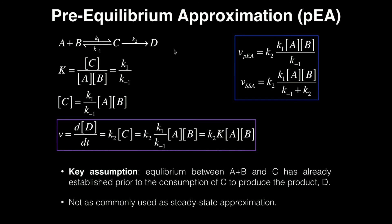Basically, because we assume equilibrium established in the pre-equilibrium approximation prior to the consumption of C to form D, that's why you don't see this added K2 in the denominator here for that expression.